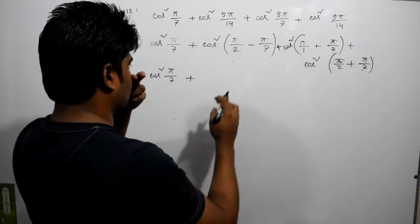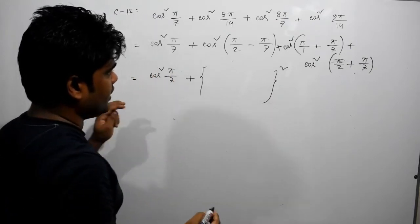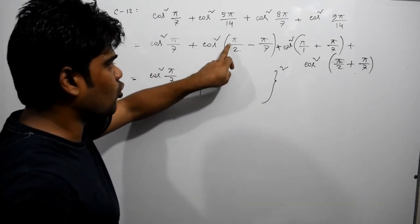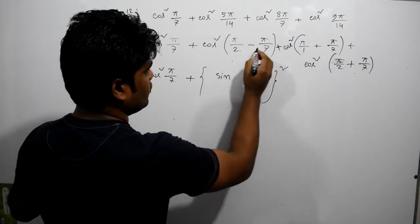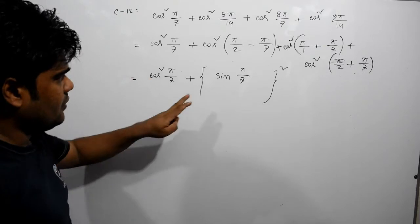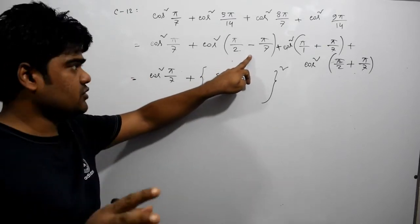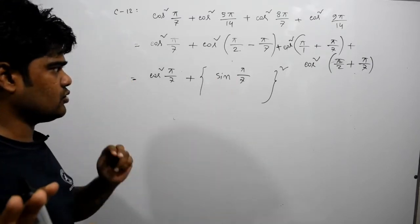How do we look? Cos square pi by 7 plus sin square. So what is the first quadrant? First quadrant, and cos positive, so it is positive, and this is not possible.